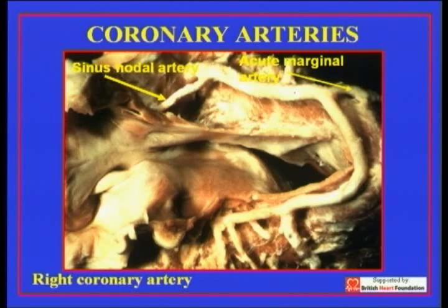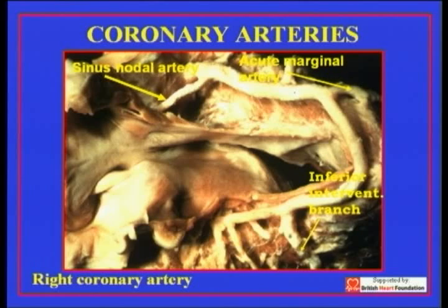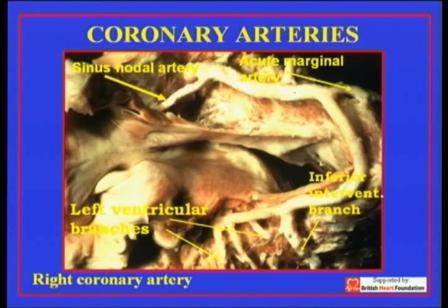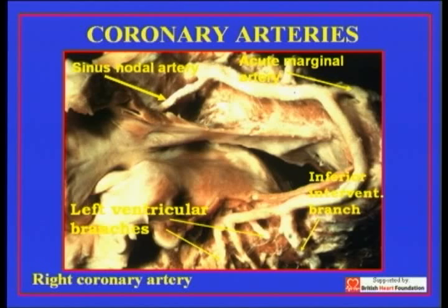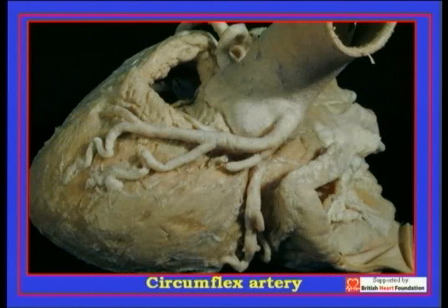The other important branches of the right coronary artery are the acute marginal branch, which takes off at the acute margin. In this particular specimen, we see the major artery running down to supply the diaphragmatic surface of the heart — the so-called posterior interventricular branch, which in reality is inferior and interventricular. In the majority of the population, the right coronary artery continues beyond the site of the interventricular septum — the part we call the crooks of the heart — to supply the diaphragmatic surface of the left ventricle.